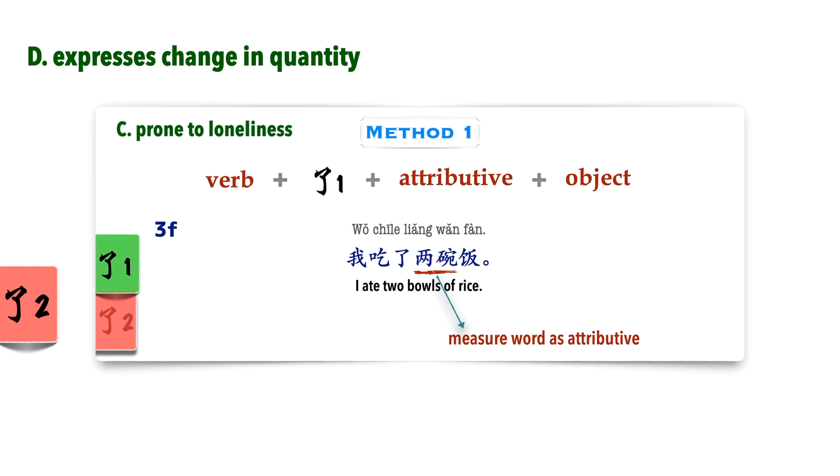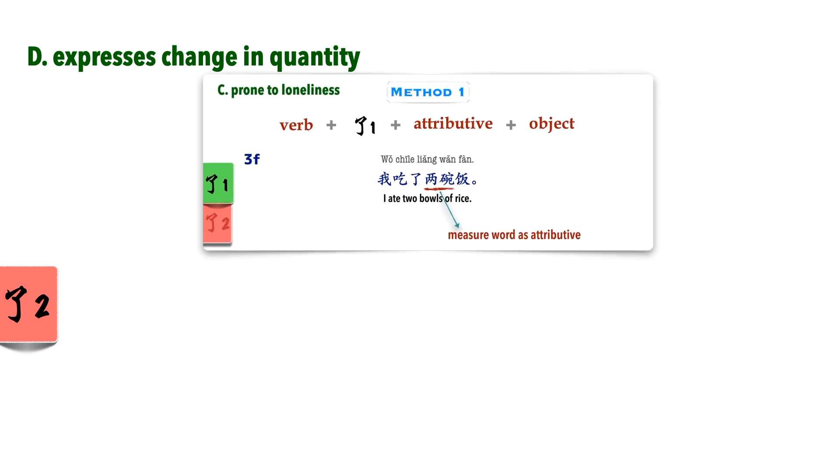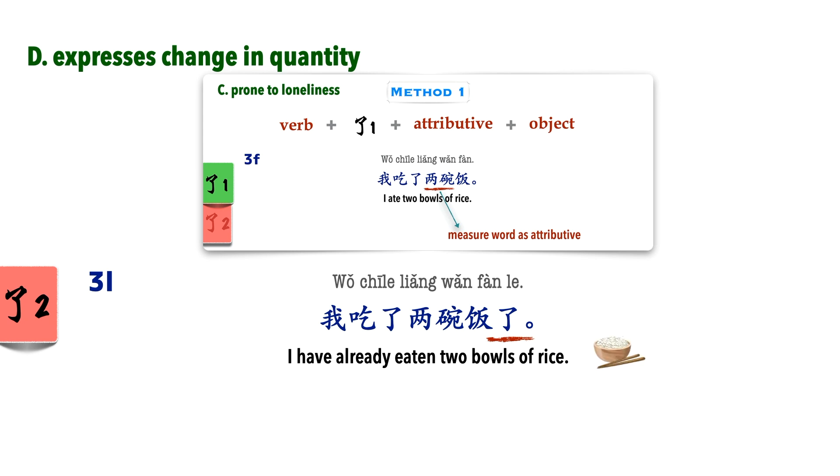Let's use a previous example to illustrate this. 我吃了两碗饭. As we learnt earlier, in order to make the sentence sound complete, we need an attributive before the object. And in this case, the attributive is 两碗. So in this sentence, I have eaten two bowls of rice, and the action of eating is complete. Now let's see what happens if we add 了2 at the end of it. 我吃了两碗饭了. This basically still means that I ate two bowls of rice. But the final 了2 indicates a change in number, and this is something in progression.